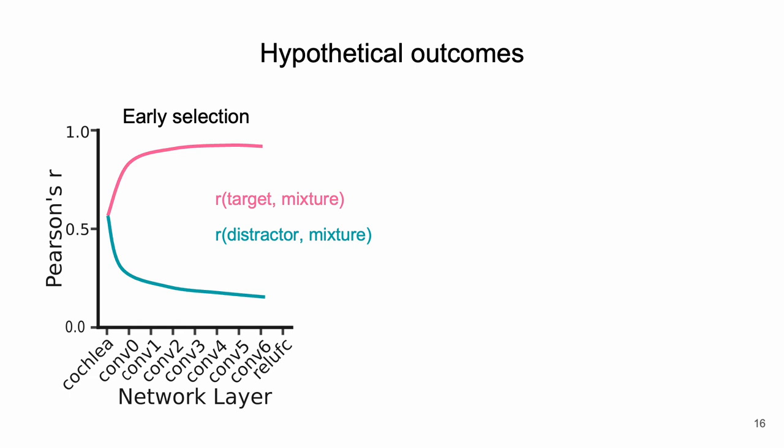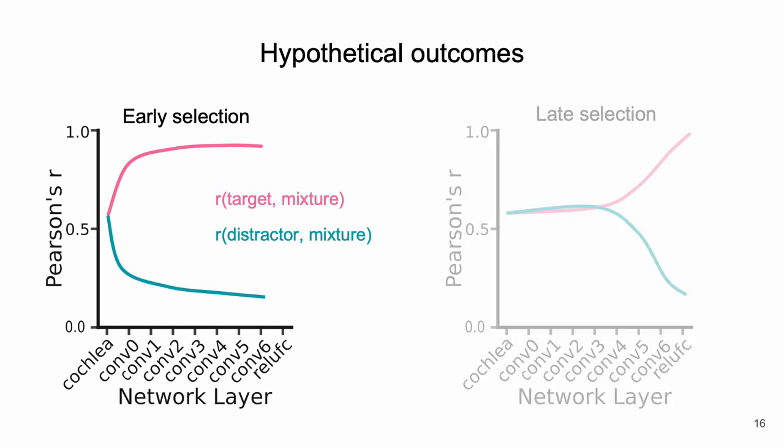In this analysis there are a few possible outcomes. In the first we would see a difference in the correlations at the early layers. This would imply that task-irrelevant information is removed at the model's early processing stages. Alternatively we could see a difference in correlations emerge only at the deeper layers and this would imply the model can only selectively attend once higher order representations have been obtained.